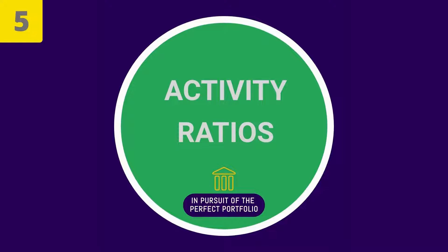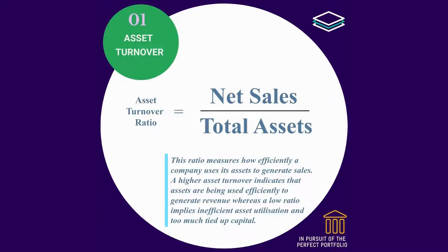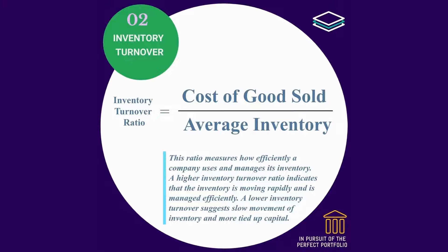Number 5: Activity ratios. Asset turnover ratio is equal to net sales divided by total assets. This ratio measures how efficiently a company uses its assets to generate sales. A higher asset turnover indicates that assets are being used efficiently to generate revenue, whereas a low ratio implies inefficient asset utilization and too much tied-up capital. Inventory turnover ratio is equal to cost of goods sold divided by average inventory. This ratio measures how efficiently a company uses and manages its inventory. A higher inventory turnover ratio indicates that the inventory is moving rapidly and is managed efficiently.